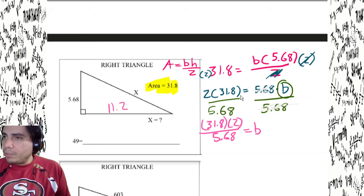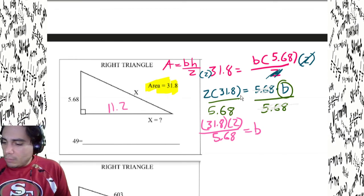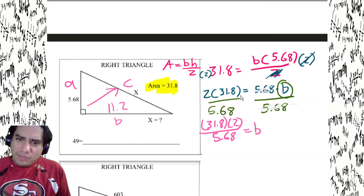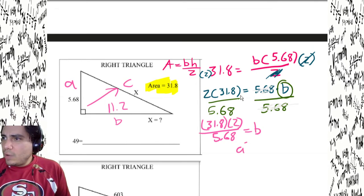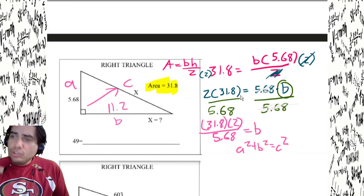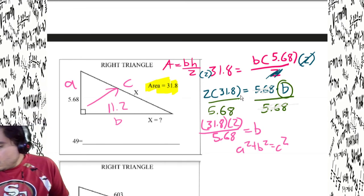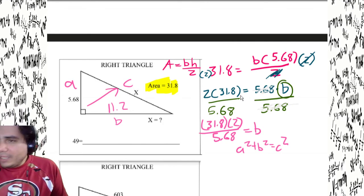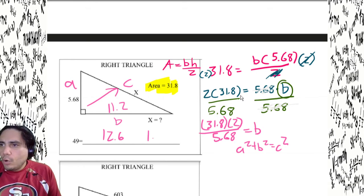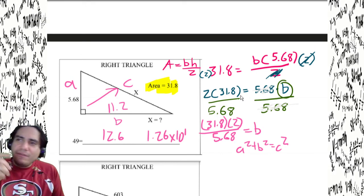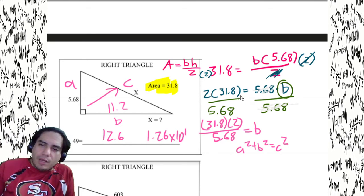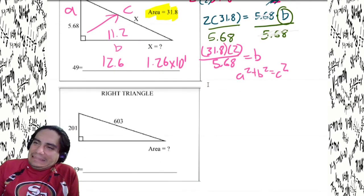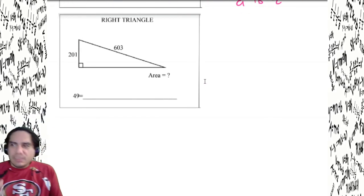Now we have both legs — a is 5.68 and b is 11.2 — and we need to find c. Use a squared plus b squared equals c squared. 11.2 is already in the calculator, square it. Add 5.68 squared. Square root. Answer is 12.6 or 1.26 times 10 to the first. Reasonable — larger than both legs because it's the hypotenuse.